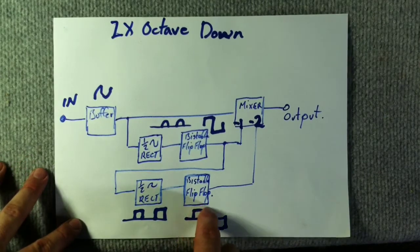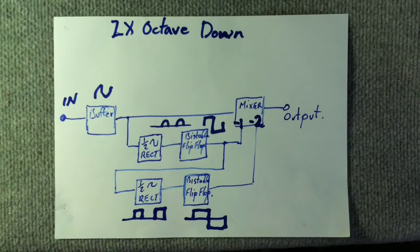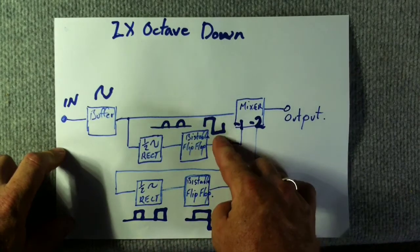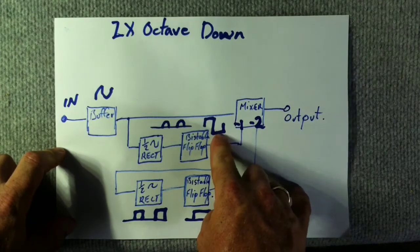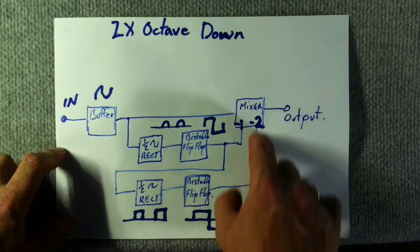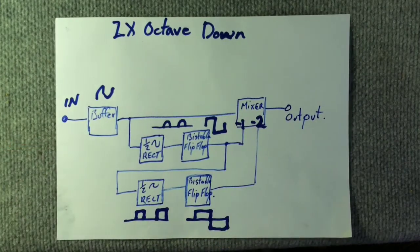And then we'll end up with a square wave that is twice the period of our previous square wave signal. Then we'll feed that into the mixer and then the output.